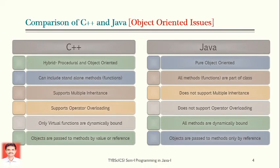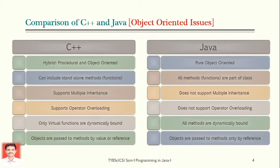Let us come to the second category about object-oriented issues. C++ is a hybrid language — it is in between procedural and object-oriented; it is not a pure object-oriented language. Java is a pure object-oriented language because everything is in terms of objects and classes. In C++, you can write any function outside a class, but in Java, functions — also called methods — must be part of a class. You cannot write a function or method outside a class. That is why Java is called pure object-oriented.